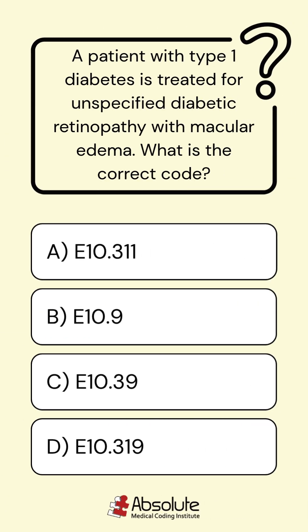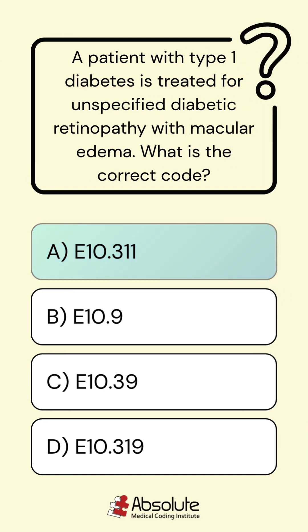A patient with type 1 diabetes is treated for unspecified diabetic retinopathy with macular edema. What is the correct code? A. E10.311, B. E10.9, C. E10.39, D. E10.319. The answer is A. E10.311.